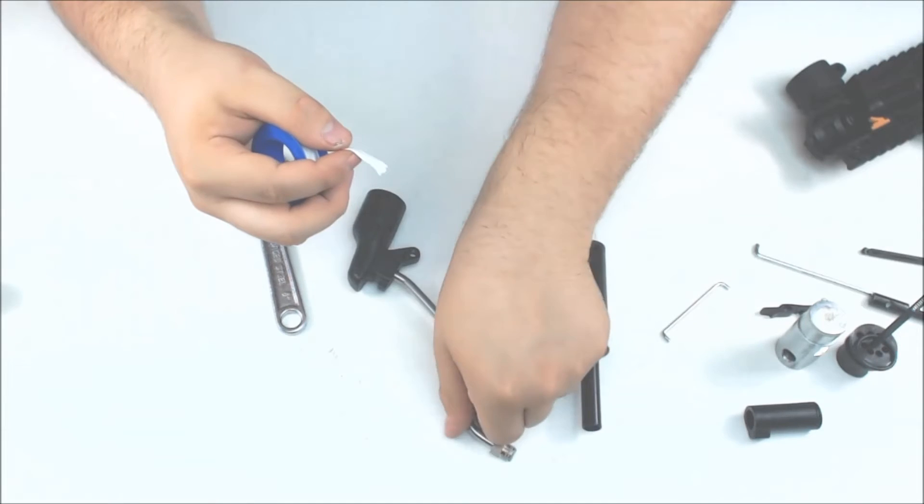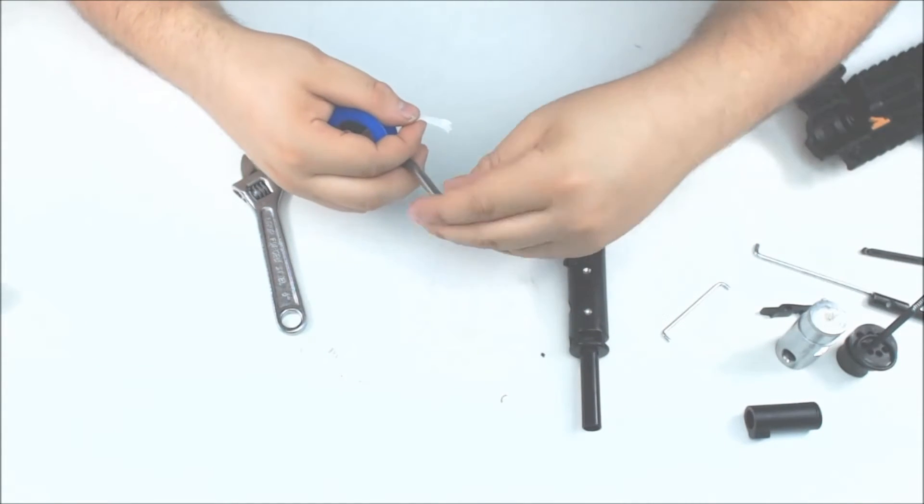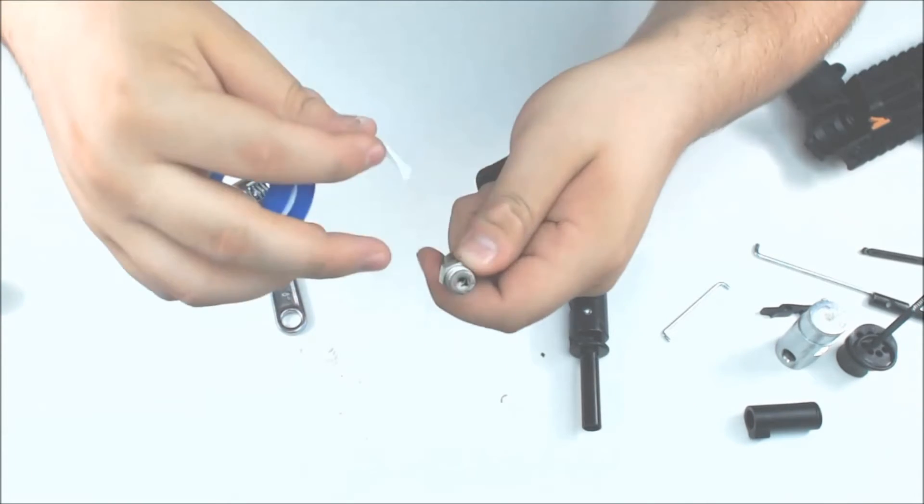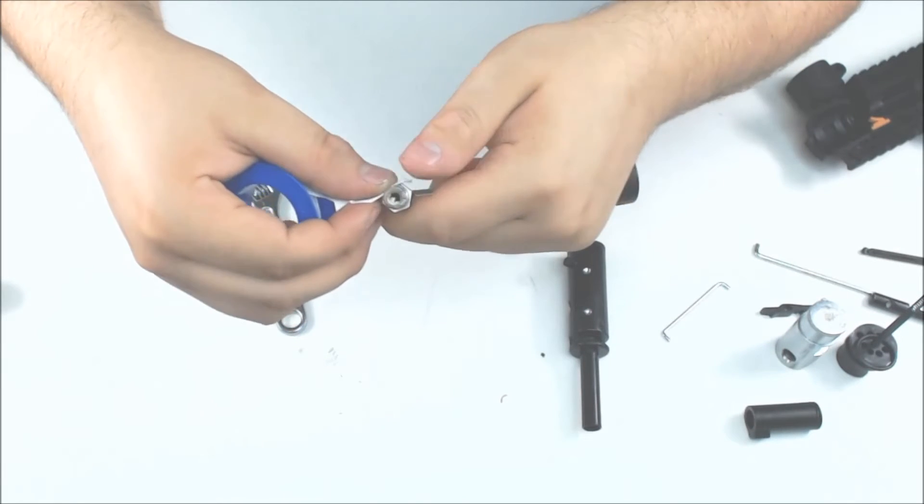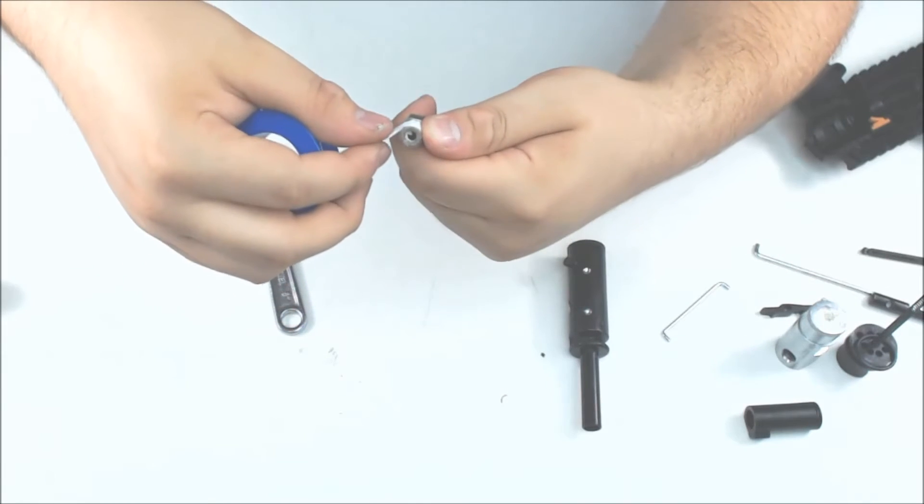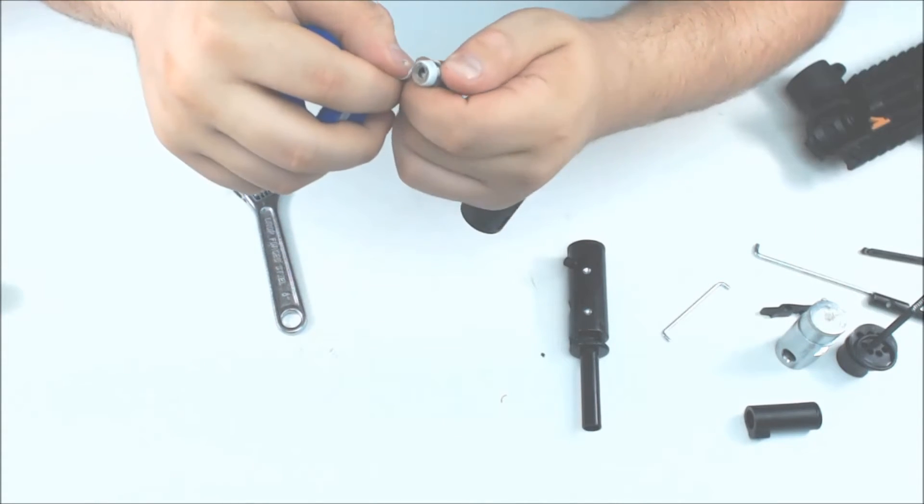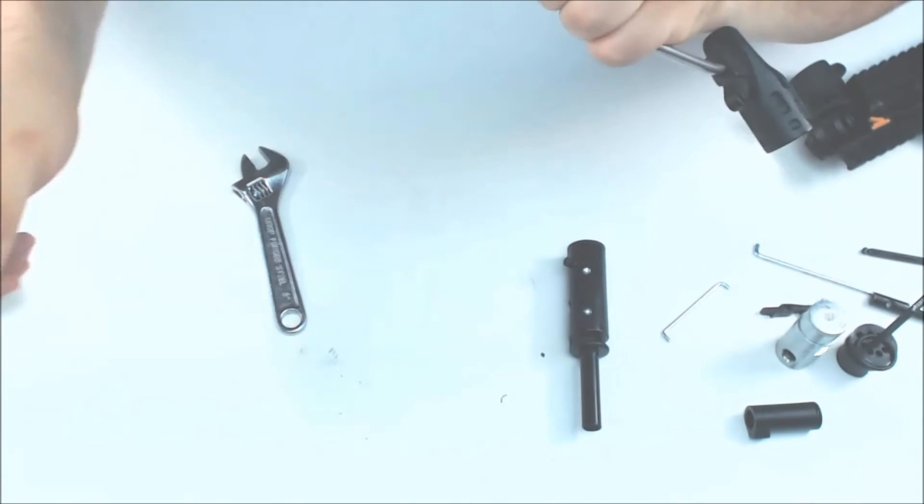We're going to pull a little bit out and we are going to just put a little bit on the threads. We're going to flatten it out and then we're just going to rotate it one time around. You don't need to put a whole bunch of Teflon tape on. Just one time around is good. Tear it off.